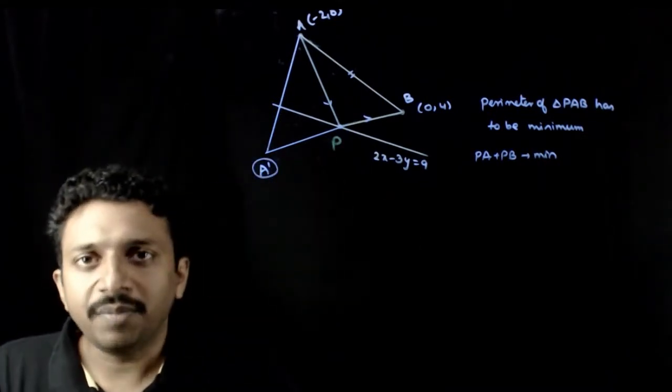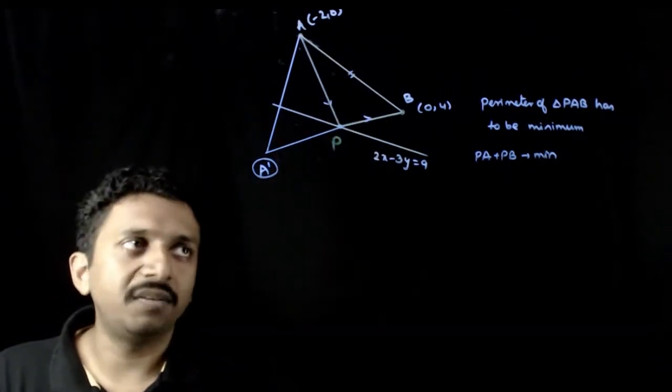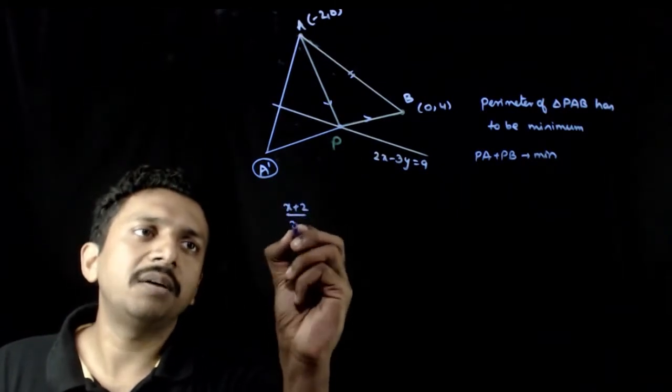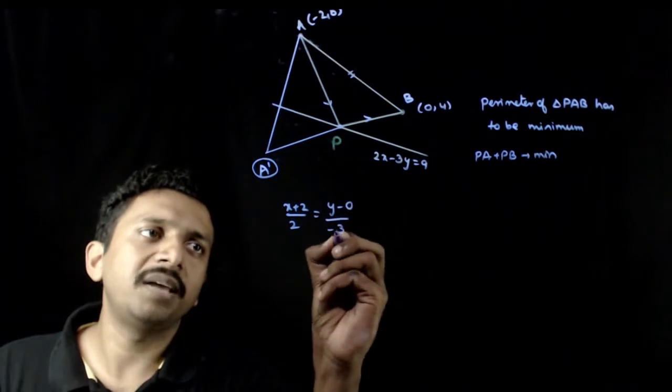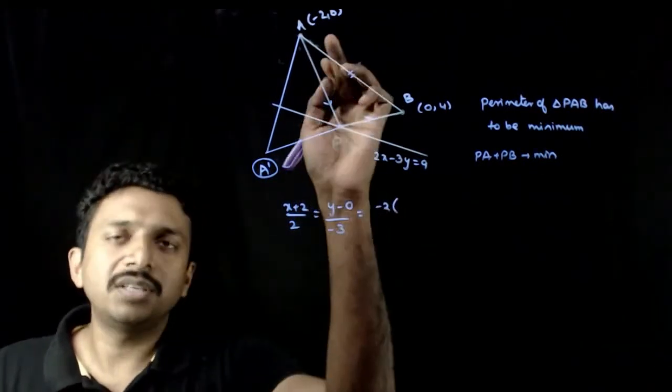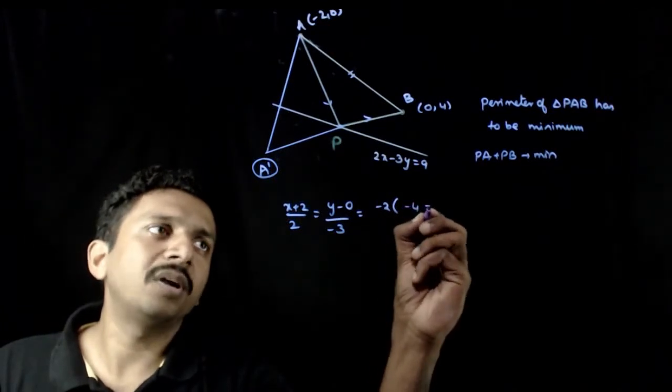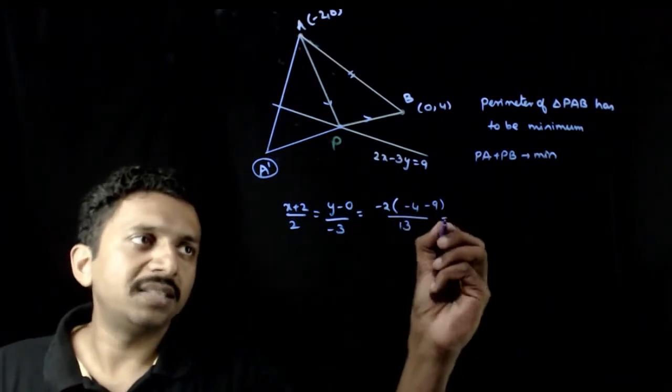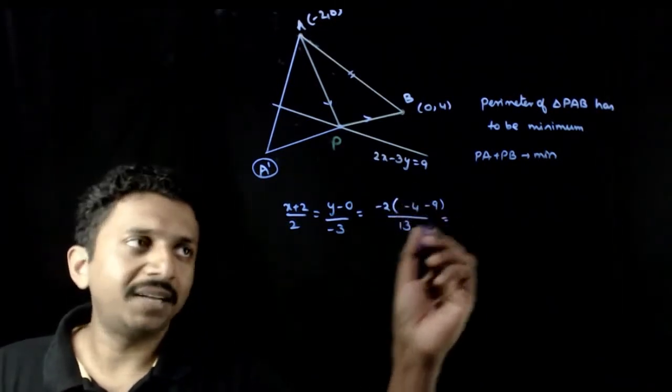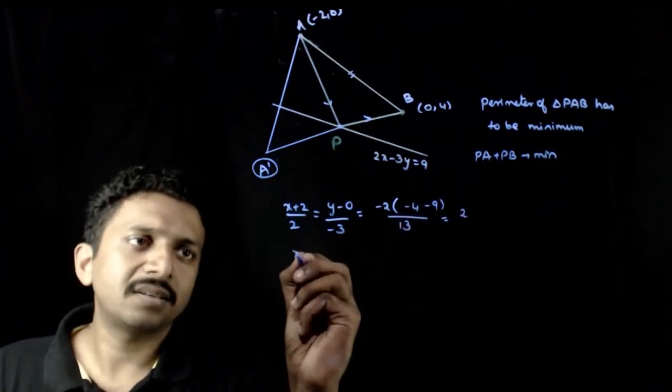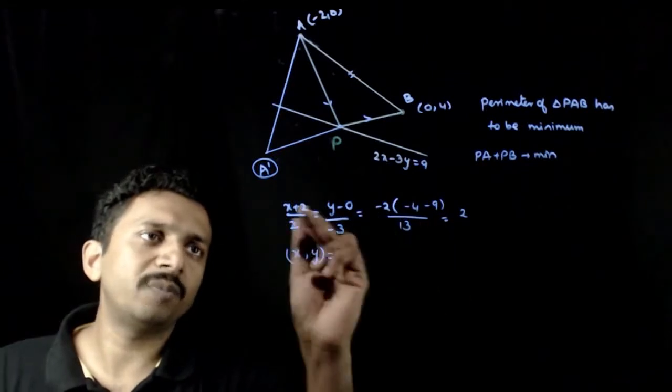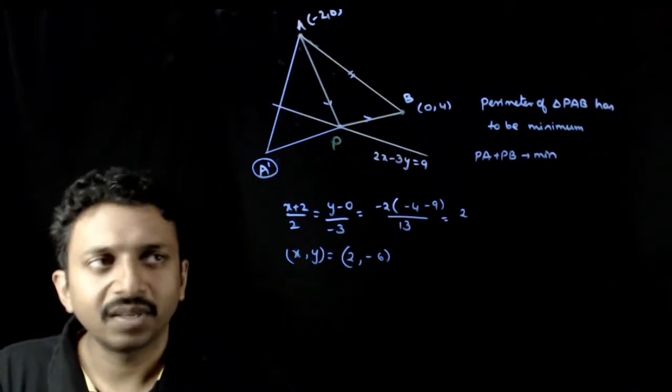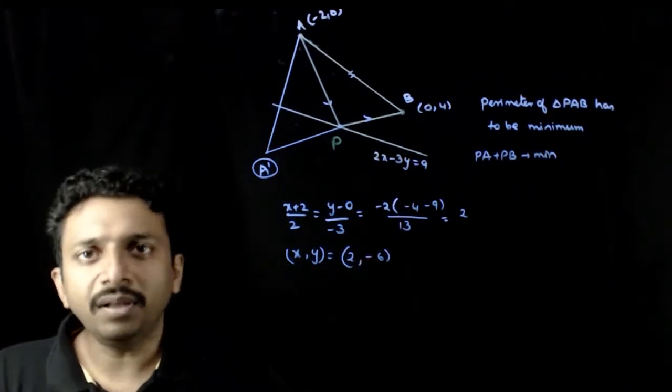So first I will find the image of A about the line 2x minus 3y equals 9. The formula is (x minus x1)/A equals (y minus y1)/B equals minus 2 times (we need to put this point on this line): (-4 minus 9)/(A² plus B²) equals -13/13. That equals minus 2 into minus 13 by 13, which equals 2. So (x, y) equals (4 minus 2, -6), which is (2, -6). So (x, y) equals (2, -6).